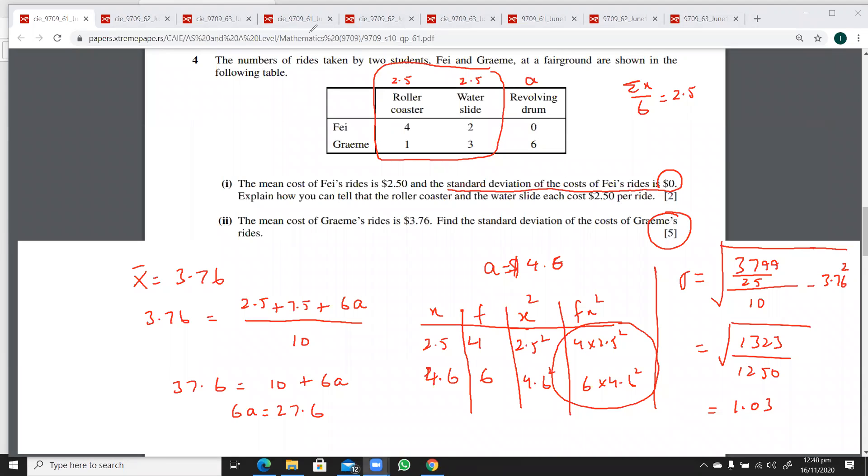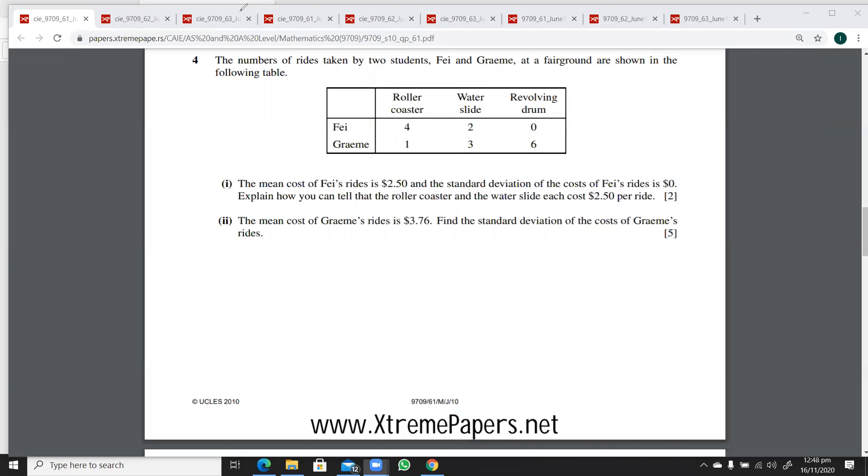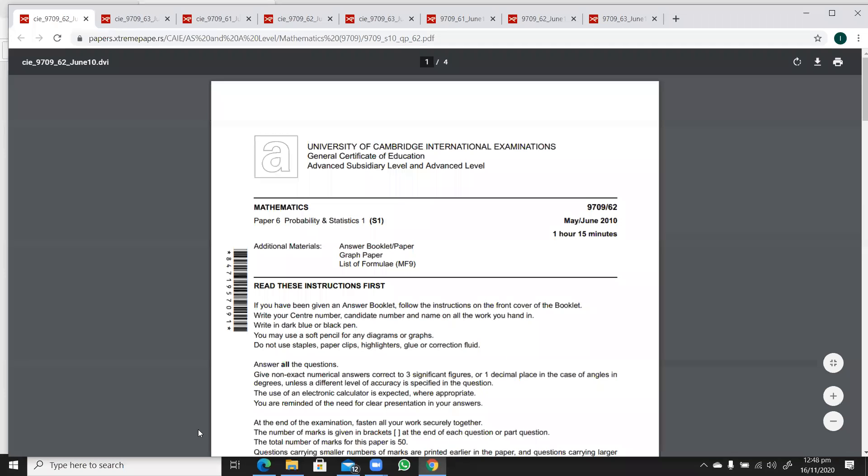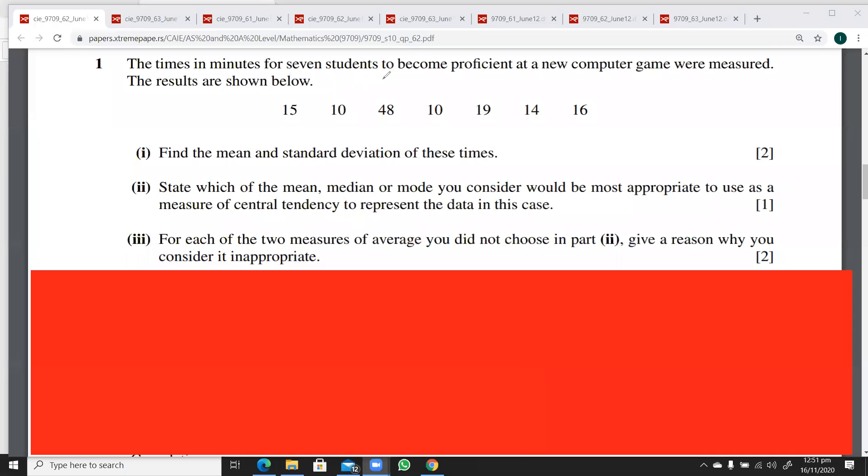This is from June 10 variant 62. The very first question says find mean and standard deviation of these times. Let's do the first part quickly. For the mean, this is raw data, so you apply the formula Σx over n.